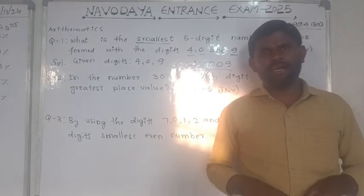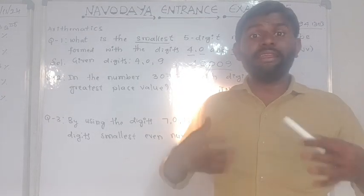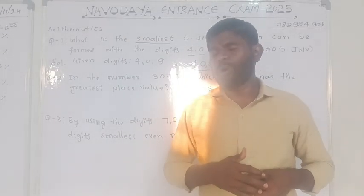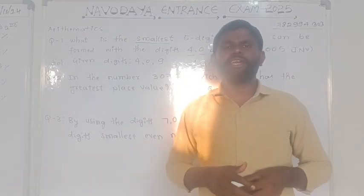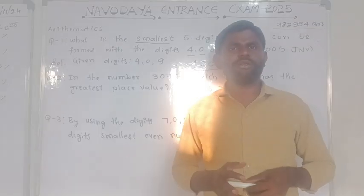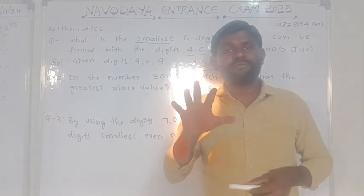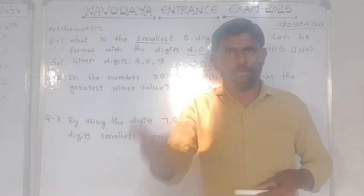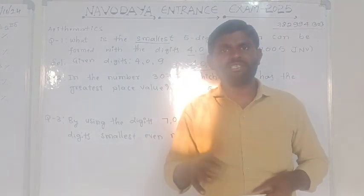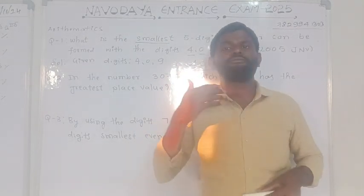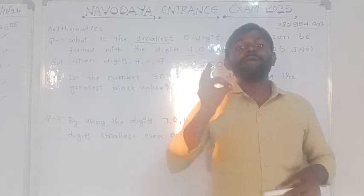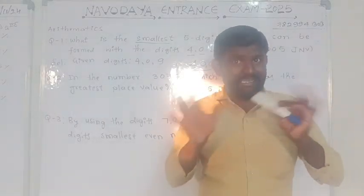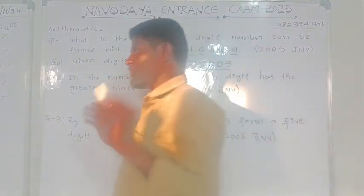You may ask: why don't we take 4 three times? There is a condition — among the given digits, the least number you may repeat. You may take it 2 times, 3 times, or 4 times. That should be the smallest number among the given digits. That is the condition — keep it in your mind.